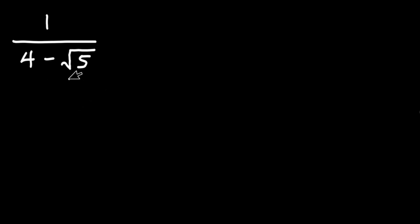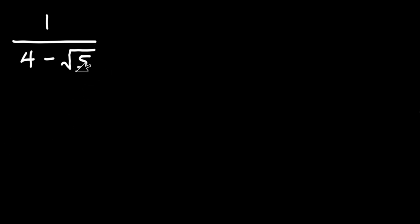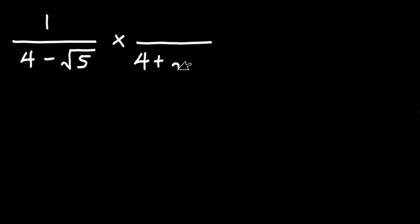On the denominator side you notice that we have square root of 5 right here, which shouldn't be the case. Note that in math the denominator must not contain a radical sign. So it is important for us to get rid of this square root. The easier way to do this is to multiply the denominator by the conjugate of what we have, which is 4 plus square root of 5.